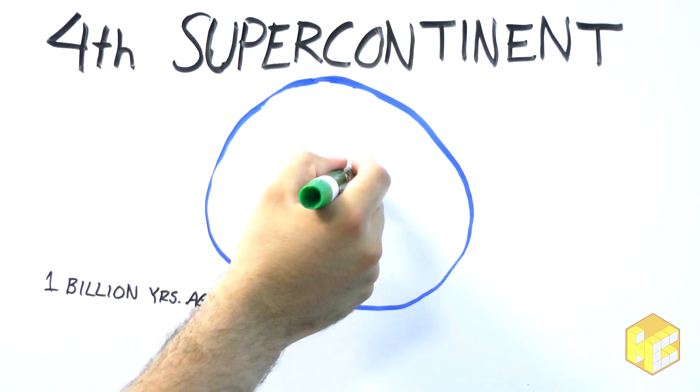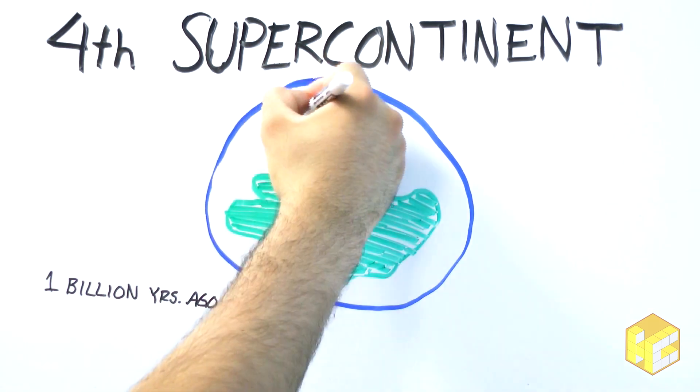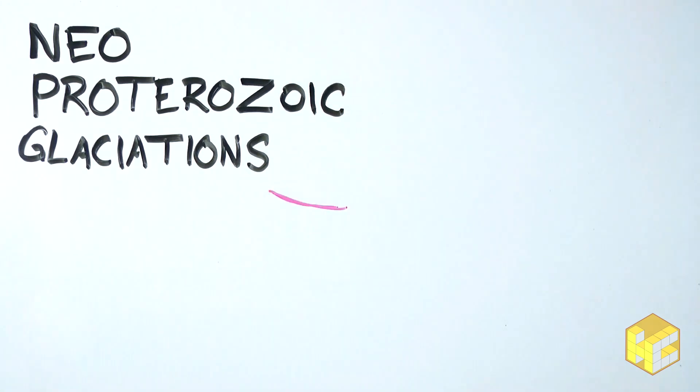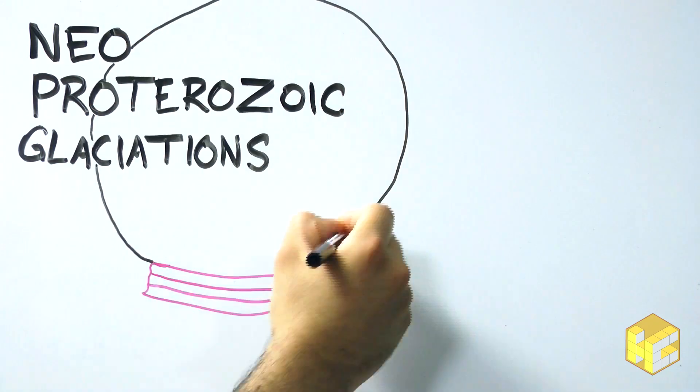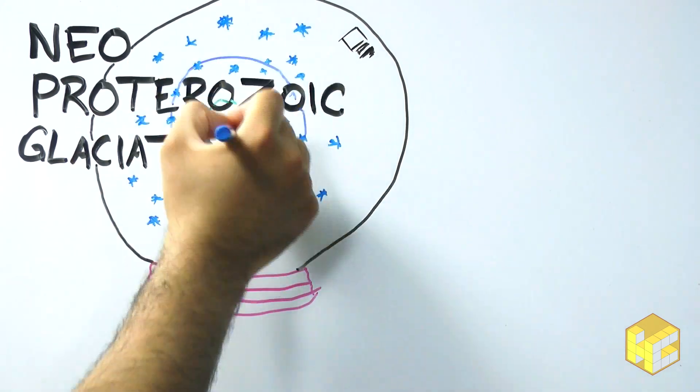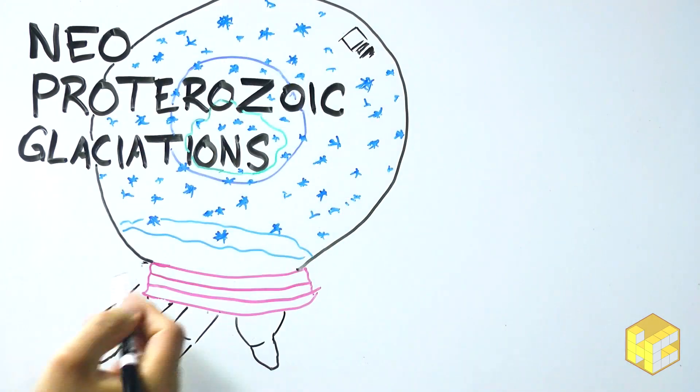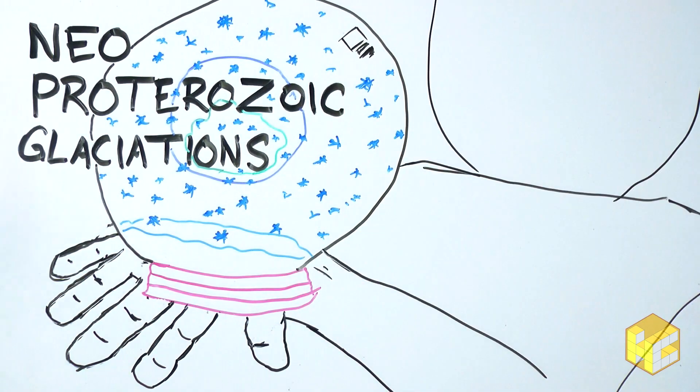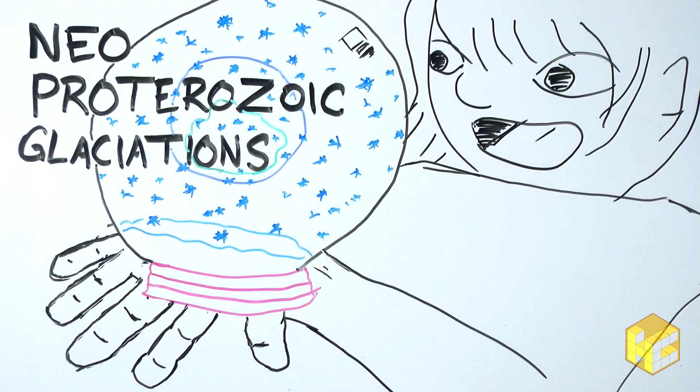Rodinia formed 1 billion years ago and saw the second Snowball Earth, known as the Neoproterozoic Glaciations. Rodinia is about as far back as scientists have been able to determine with any degree of certainty what the orientation of the continent was or how the plates were squished together. Advances in technology made this possible as recently as just a few years ago, but more about that in a bit.